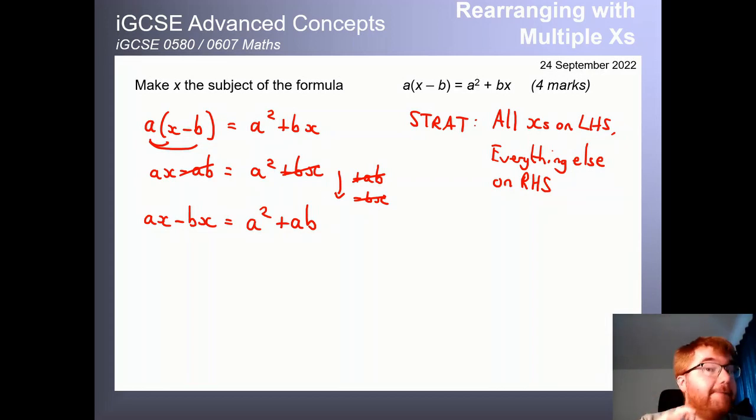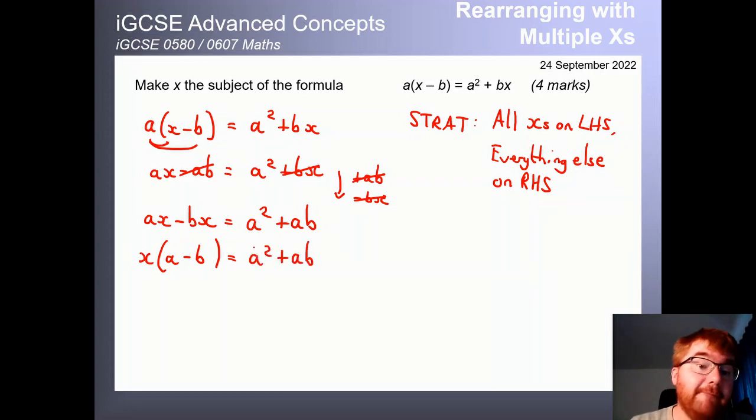Now once you've got that step, then don't forget you're factorizing into single brackets. And this is often forgotten about in these kinds of questions. So they both have an x in common. So we can take out that common factor. And then we work backwards. So what do we multiply x by to get ax? Just a. What do we multiply x by to get minus bx? Minus b. And then we can just put this over here. We could factorize this as well. That could also be useful. But we just want x to the subject. That's what we care about.